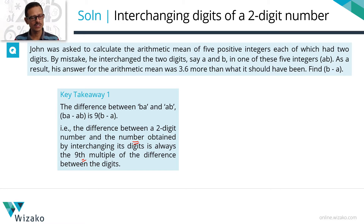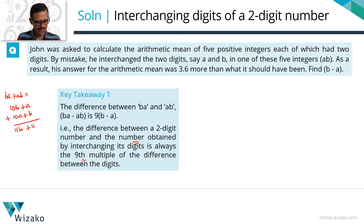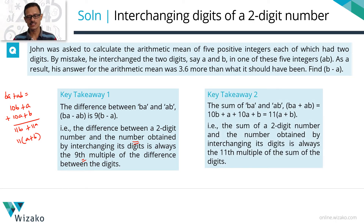What if we add the two numbers instead? BA plus AB equals (10B + A) + (10A + B) = 11B + 11A = 11(A + B). So the second derivation: the sum of a two-digit number and the number obtained by interchanging its digits is always the 11th multiple of the sum of its digits.